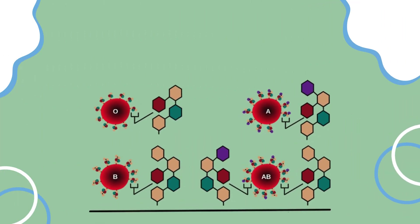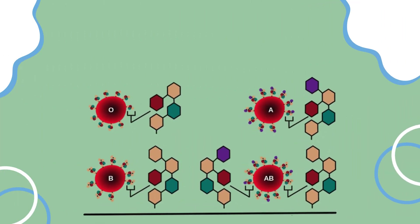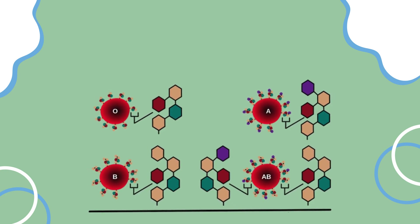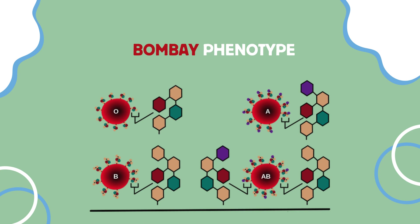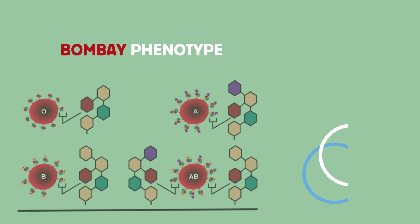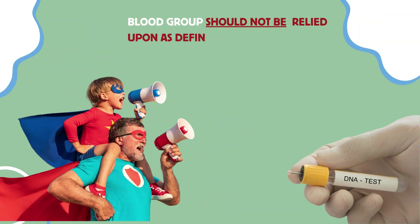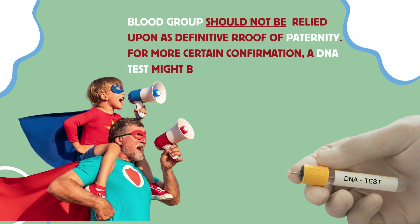It's important to note that exceptions to the rule have been identified due to genetic anomalies, such as the extremely rare Bombay phenotype blood group, which will be mentioned again in one of our upcoming videos. Additionally, blood groups should not be relied upon as definitive proof of paternity. For a more certain confirmation, DNA testing might be needed.